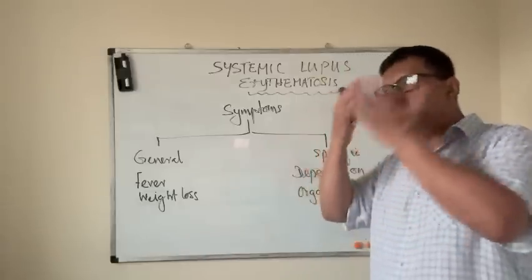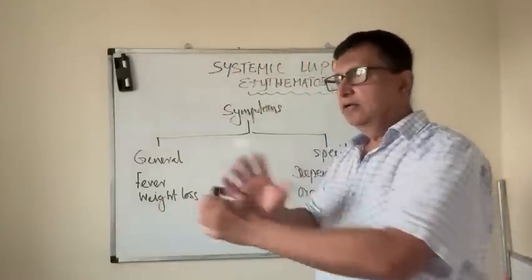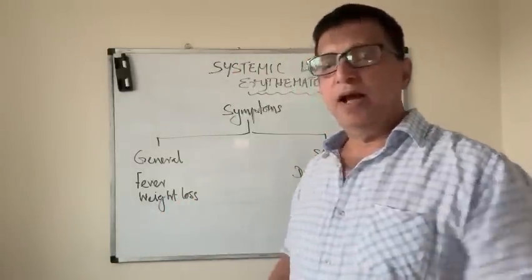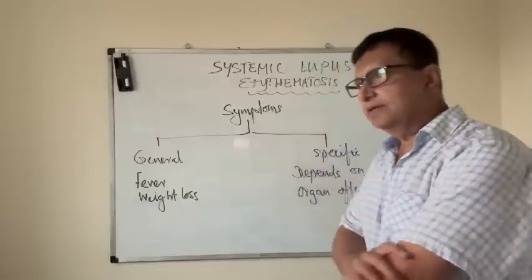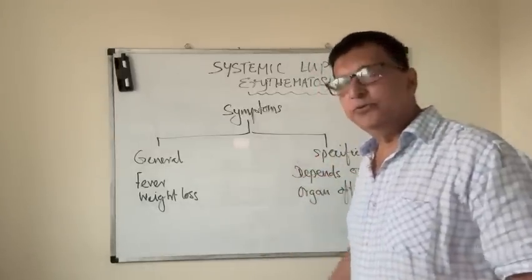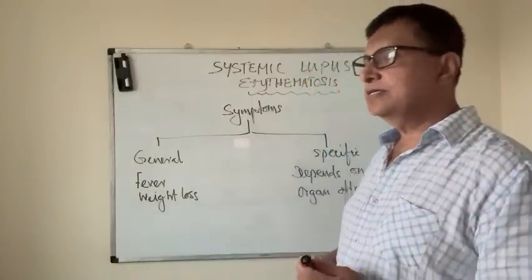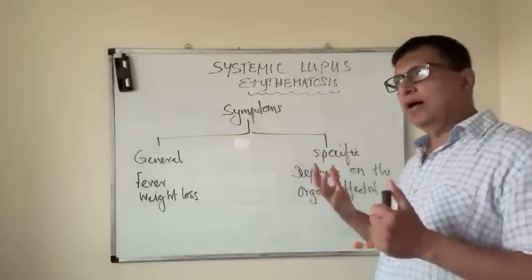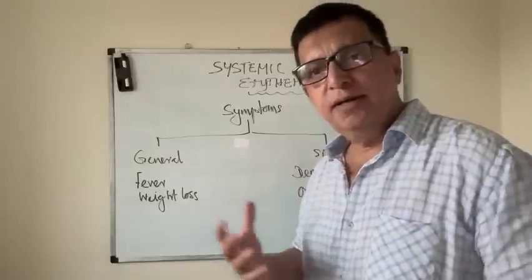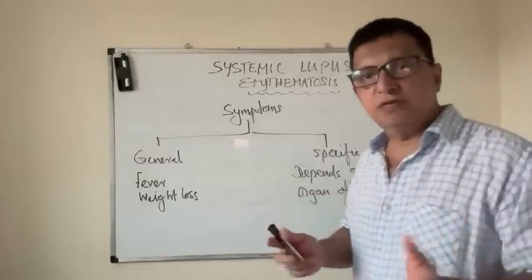For example, if the skin is affected you get the malar rash and discoid lupus erythematosus. If the kidneys are affected you get acute or chronic renal disease. If the pleura is affected you get pleural effusion. The specific symptoms depend upon the system which is affected.